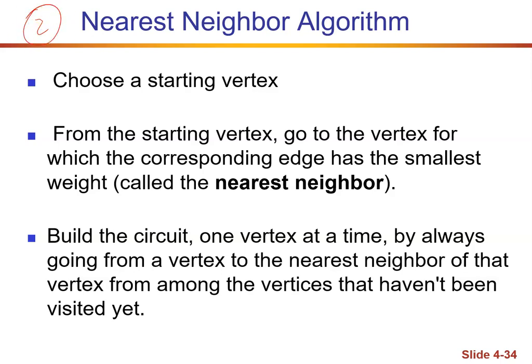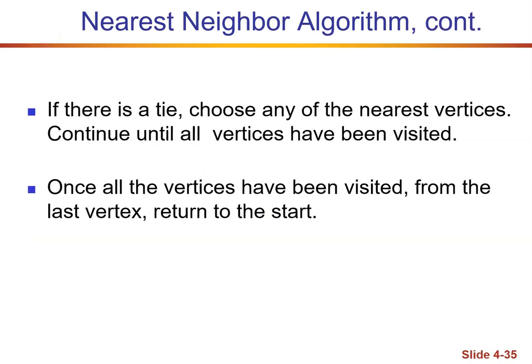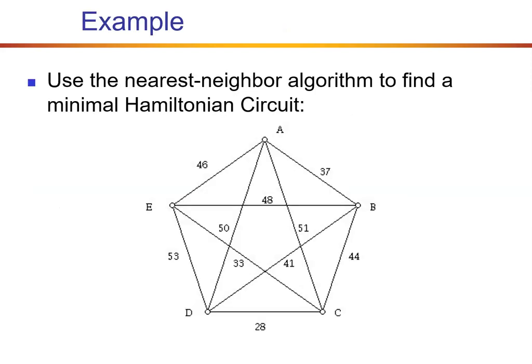The nearest neighbor algorithm. Choose a starting vertex. From that starting vertex, go to the corresponding edge that has the smallest weight — that's called the nearest neighbor. Continue building the circuit in the same approach: from that nearest neighbor, go to his nearest neighbor, one vertex at a time, always going from the vertex to its nearest neighbor until you get back to the beginning. If there's a tie, choose any of the nearest vertices and continue until all the vertices have been visited. Once you've visited all of them, return to the start and you are done.